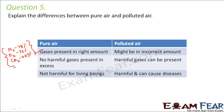Polluted air will have gases in incorrect amounts. For example, if the air is polluted, it might have a greater amount of carbon dioxide, which will increase the greenhouse effect and cause pollution. It might also have an increased amount of carbon monoxide.